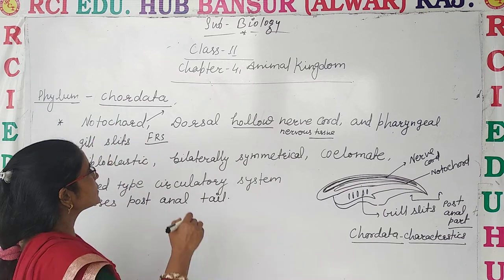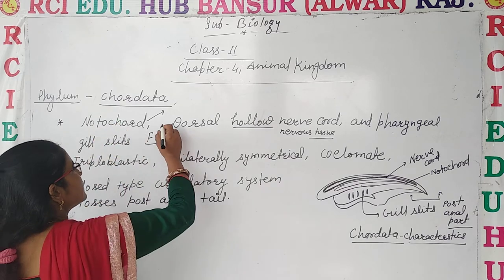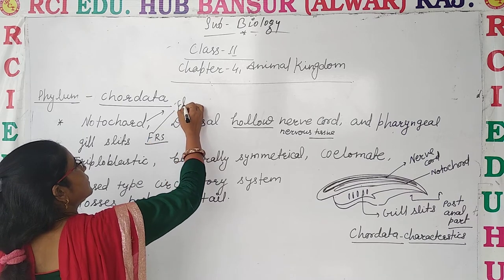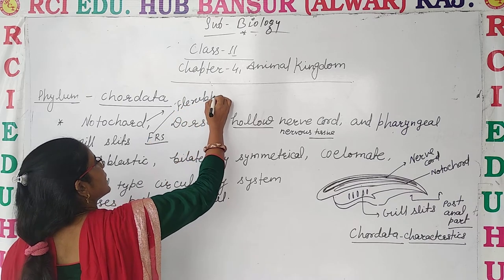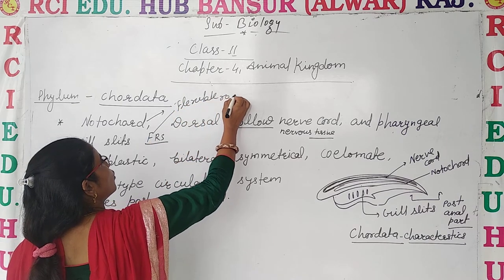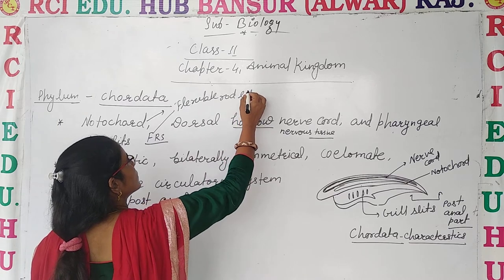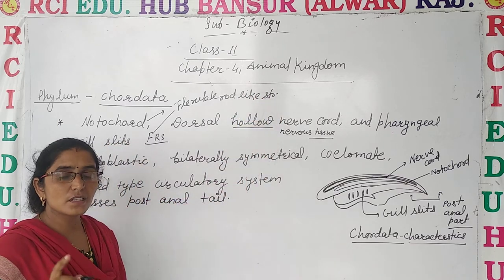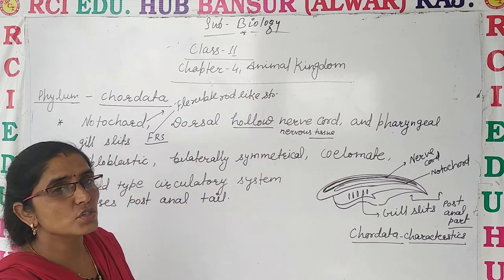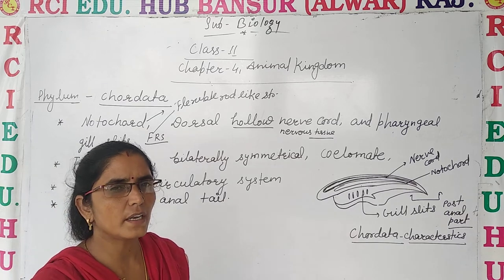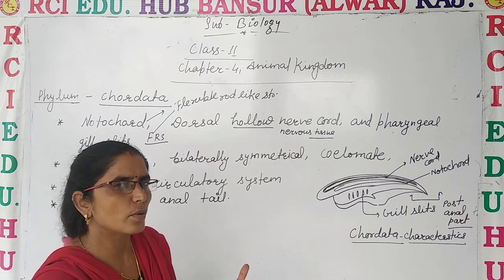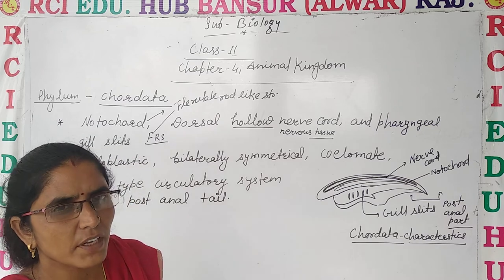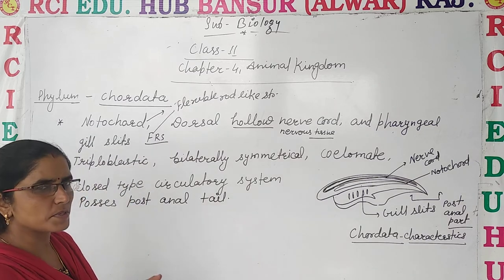What is notochord? It is a flexible rod-like structure. It is the peculiar feature of Chordata. The phyla which we have taught before were non-chordates — they do not have the notochord; notochord is absent in non-chordates.